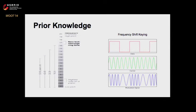This bottom row represents a modulated wave in which a one is represented by a frequency higher than the carrier, and a zero is represented by a frequency lower than the carrier. It's very intuitive when you see it this way. It's a pain to implement, but if you're interested in exactly how we did it, you can look further into the paper.